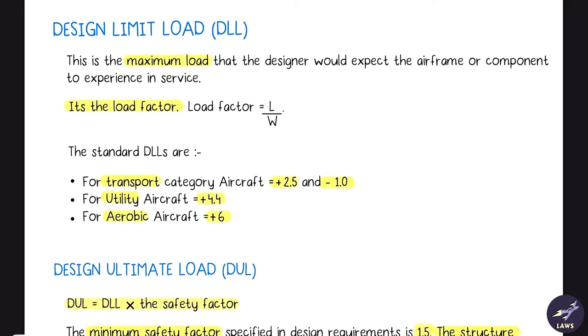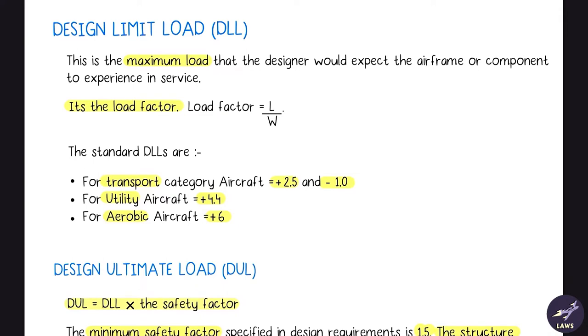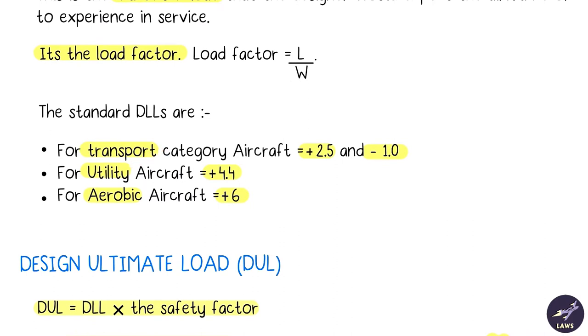Then we have design limit load, basically load factor. It is the maximum load that the designer would expect the airframe or component to experience in service. Standard design limit load factor for transport category aircraft is positive 2.5 and negative 1. Utility means you can use it for transport as well as a little aerobic, so it can be 4.4. Aerobic means plus 6.